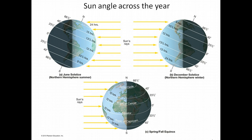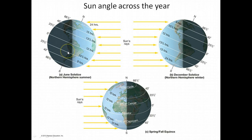It turns out there's only a portion of the Earth where the sun appears to be directly overhead at some point in the year, and that area is known as the tropics. Those areas fall between two lines of latitude: the Tropic of Cancer at 23.5 degrees north latitude, and the Tropic of Capricorn at 23.5 degrees south latitude. It's only between these areas that the sun appears vertical at some time during the year.